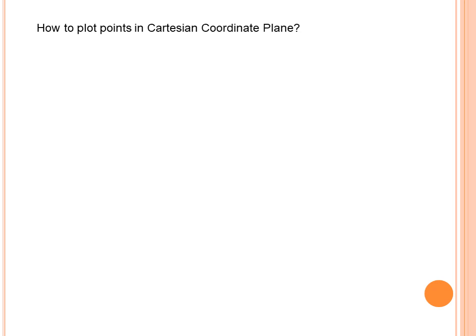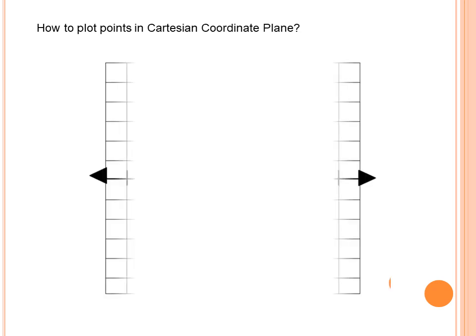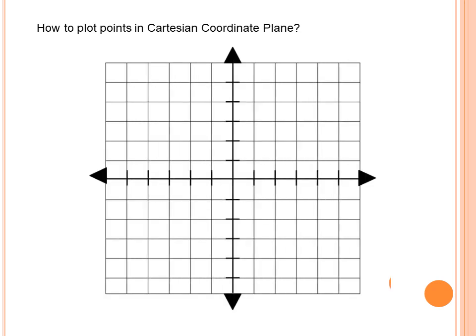How to plot points in the Cartesian coordinate plane? How do we plot points in the Cartesian plane?